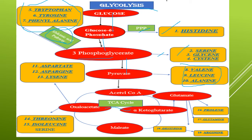From pyruvate, it is converted to acetyl-CoA and enters into the TCA cycle. From alpha-ketoglutarate, glutamate is obtained, and from glutamate: proline, glutamine, and ornithine are obtained. From ornithine, arginine is also biosynthesized. So most of the amino acids are biosynthesized either through glycolysis or from the TCA cycle.